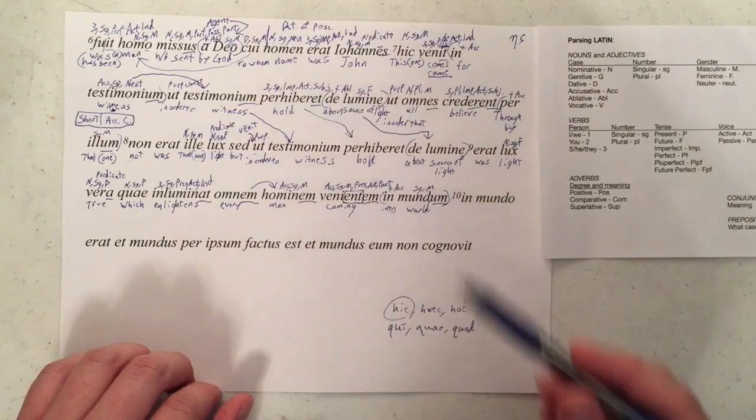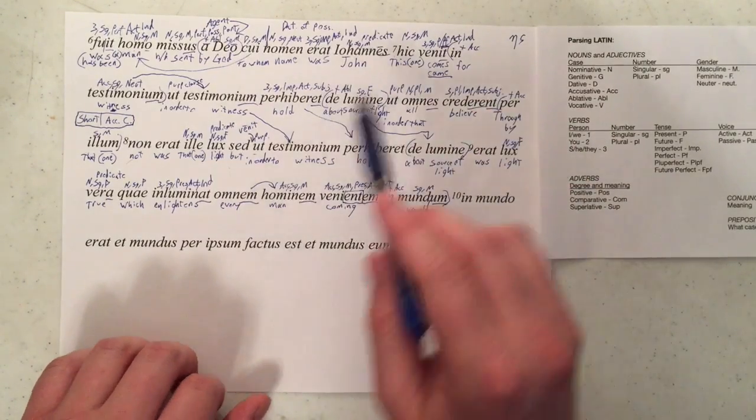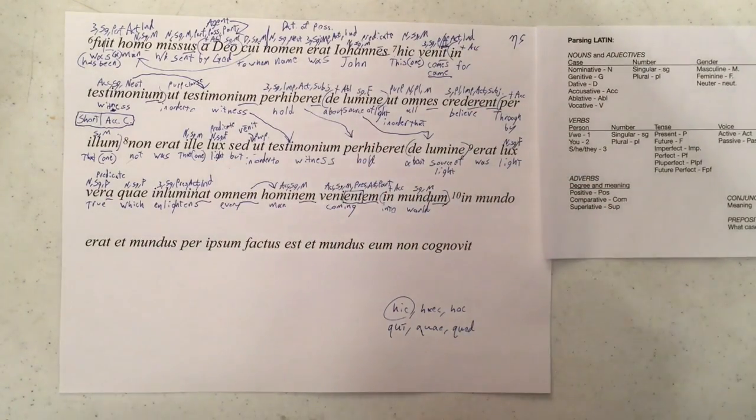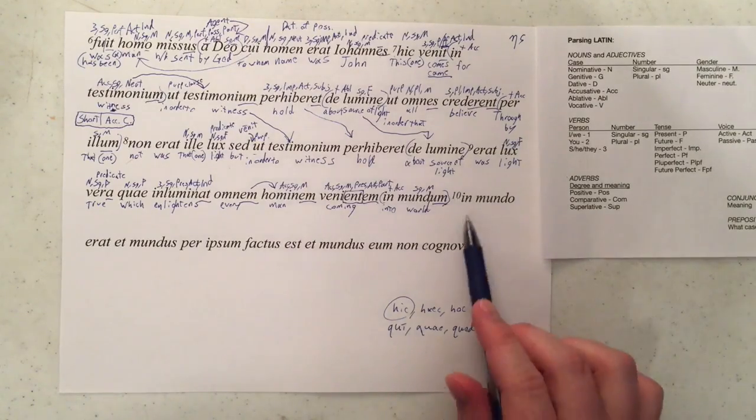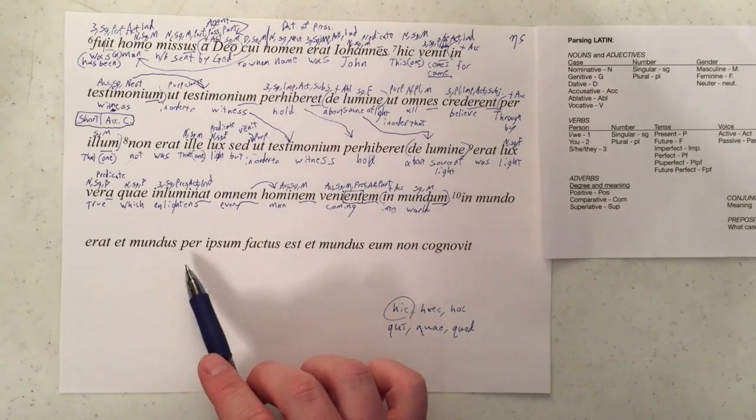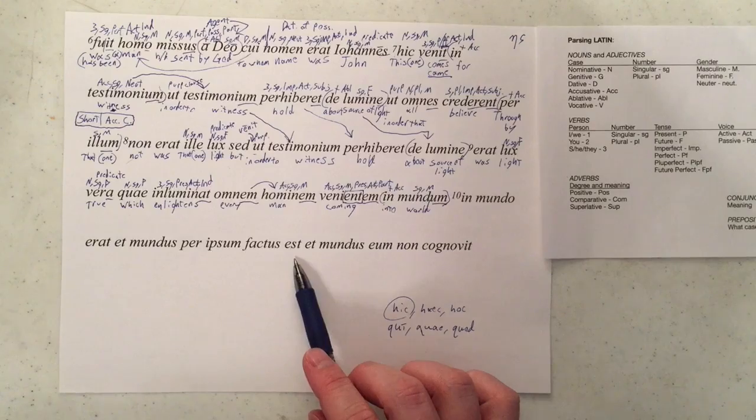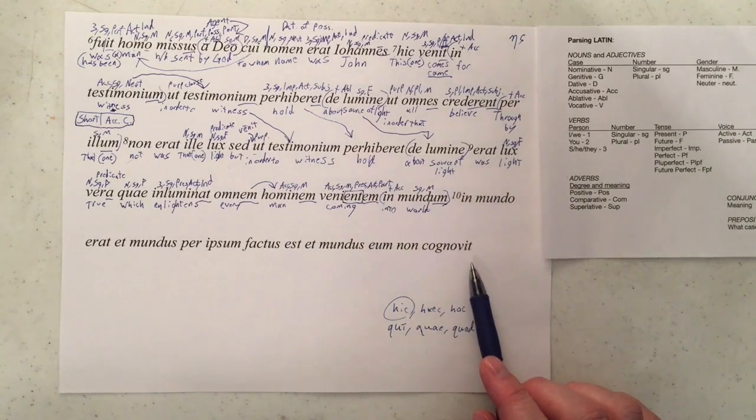If we've already parsed something like this, we're going to leave it alone and just draw an arrow from it, unless it's too crazy. Okay, first things first. Reading aloud. In mundo erat. At mundus per ipsum factus est. At mundus eum non cognovit.